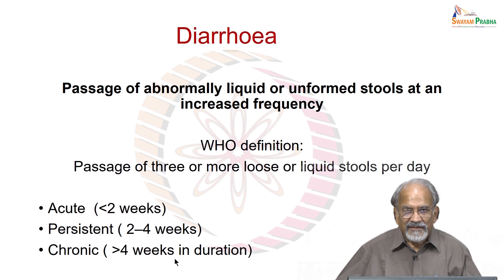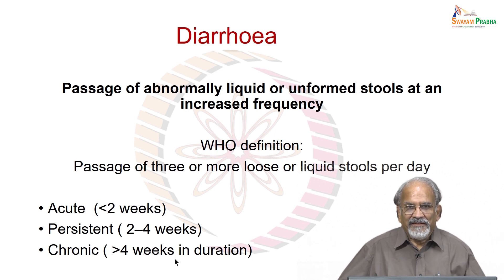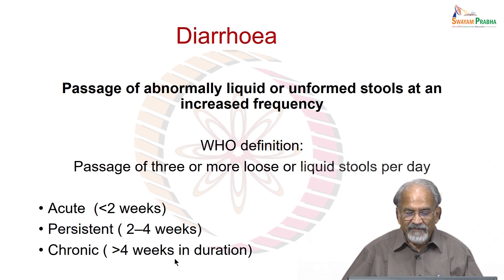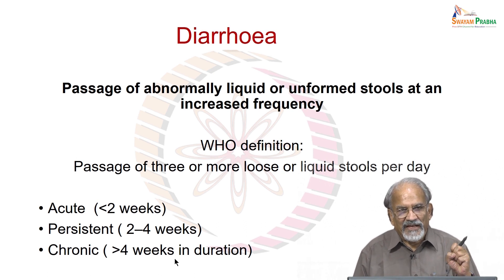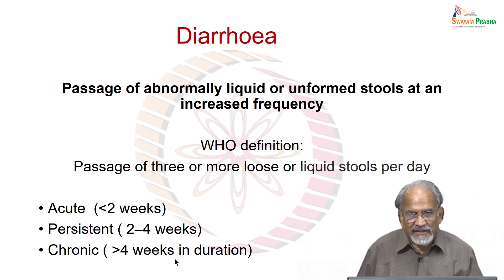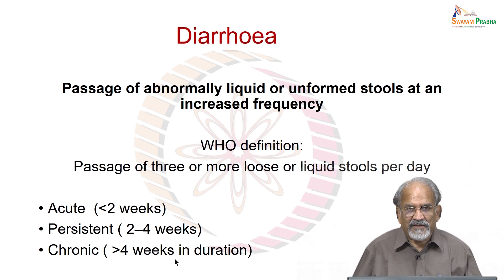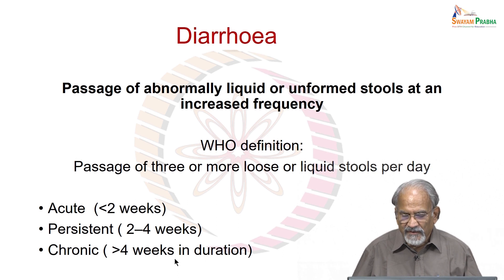Now talking on diarrhea, first of all, what is diarrhea? The definition of diarrhea is passage of abnormally liquid or unformed stool at a higher frequency. If the stool consistency becomes less and frequency becomes more than normal, this is called diarrhea. WHO defines diarrhea as passage of 3 or more loose or liquid stools per day.